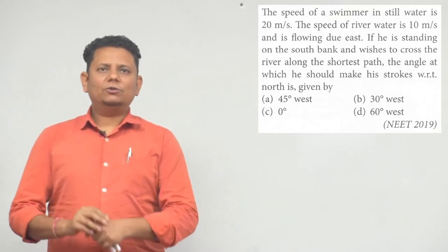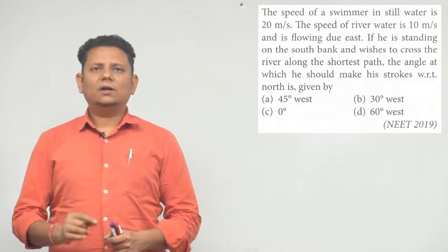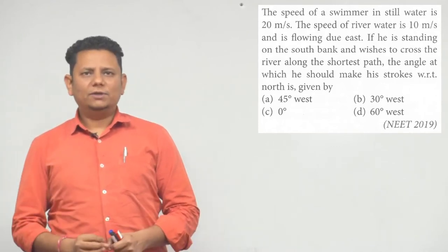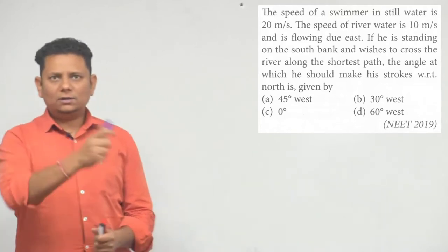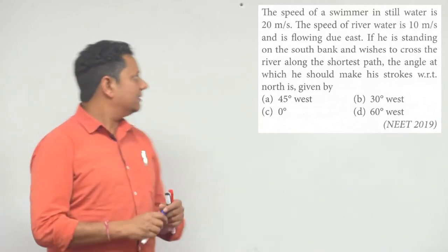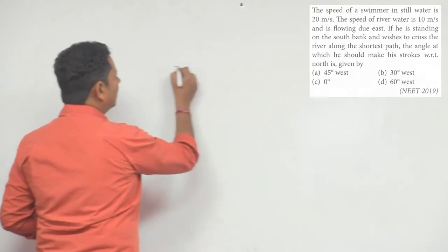If he is standing on the south bank of the river and wishes to cross the river along the shortest path possible, the angle at which he should make his strokes with respect to north is given by. Now very interesting, so this is the scenario.